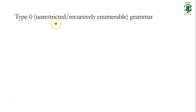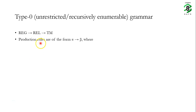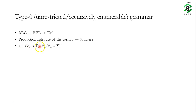The type 0 grammar is also called the unrestricted or recursively enumerable grammar. It produces a recursively enumerable language accepted by a Turing machine. The production rules are of the form alpha arrow beta, where alpha can be any combination of terminals or non-terminals with the restriction that it must contain at least one non-terminal. This is expressed as: alpha belongs to (Vn union sigma)* followed by Vn followed by (Vn union sigma)*, using the Kleene closure.